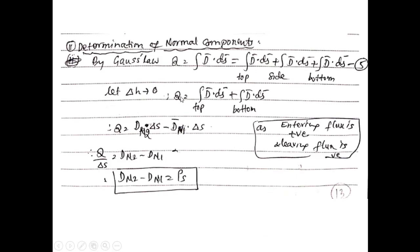For normal components, by Gauss's law Q = ∮ D bar · dS bar. Dividing the cylindrical pill-box into top, side, and bottom surfaces, as the height tends to zero the side surface contribution vanishes. Integrating and applying limits gives D-n2 · dS − D-n1 · dS = Q. Dividing throughout by delta-S gives D-n2 − D-n1 = rho-S.